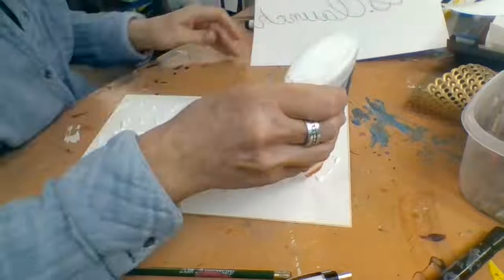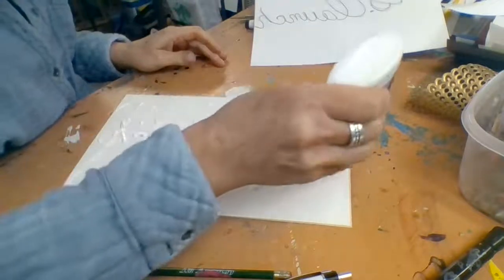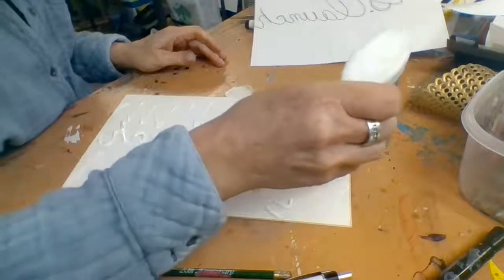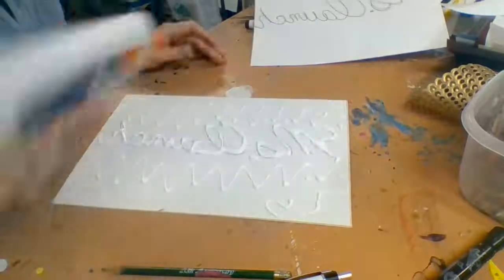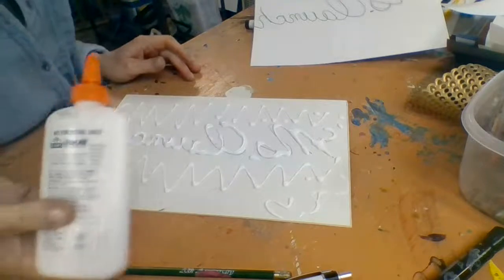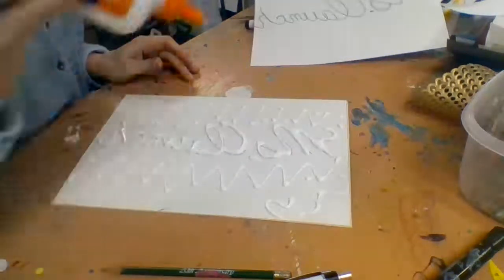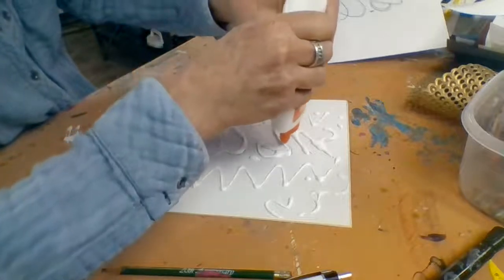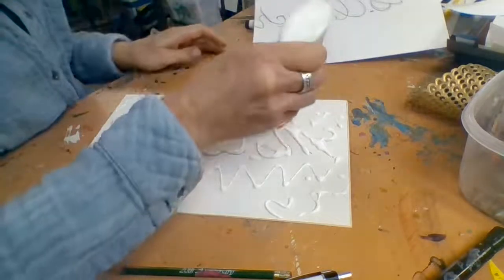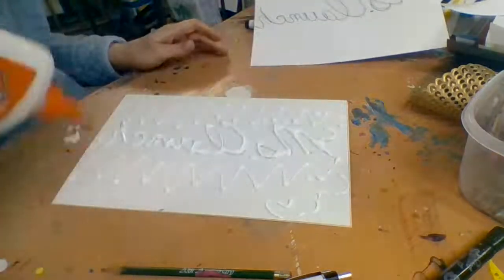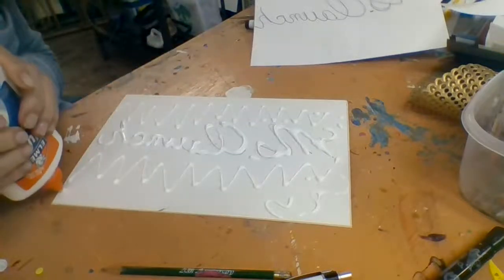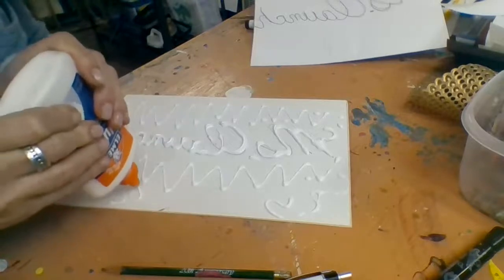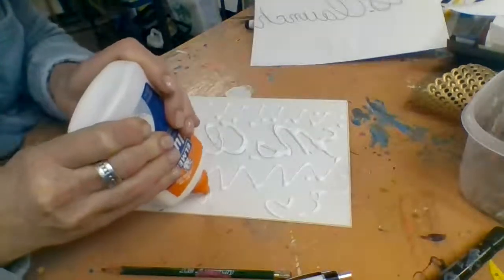I can do curvy lines. And if I don't like something, I can just wipe it off, just scrape it off and keep going. So the main thing that I want to show up nicely is my word, whatever it is, or my name. And then I want to put a lot of cool textures and designs in the background.